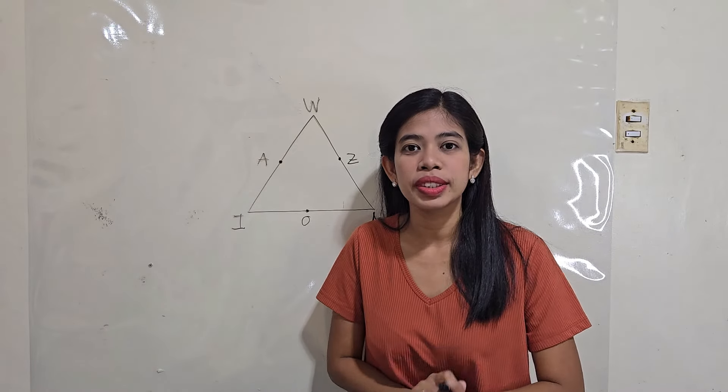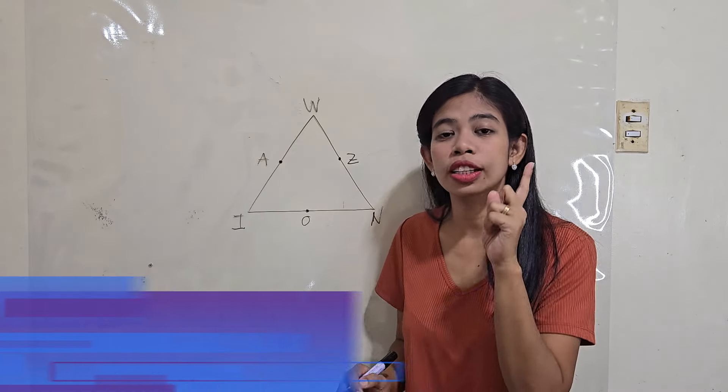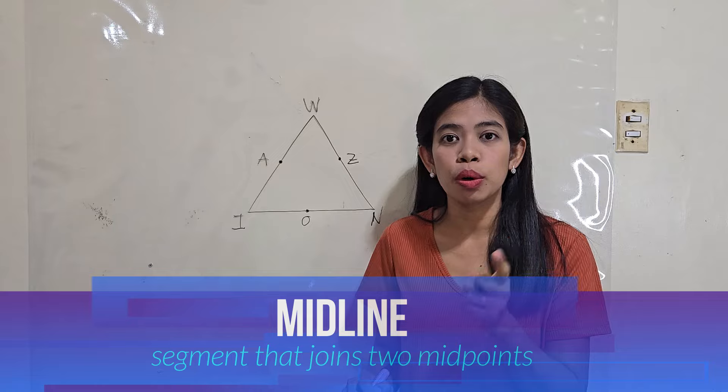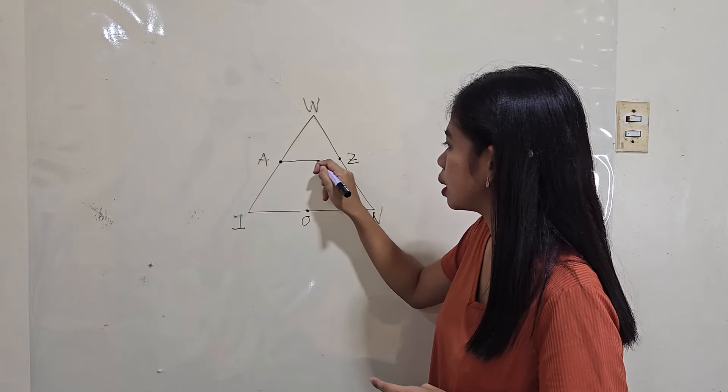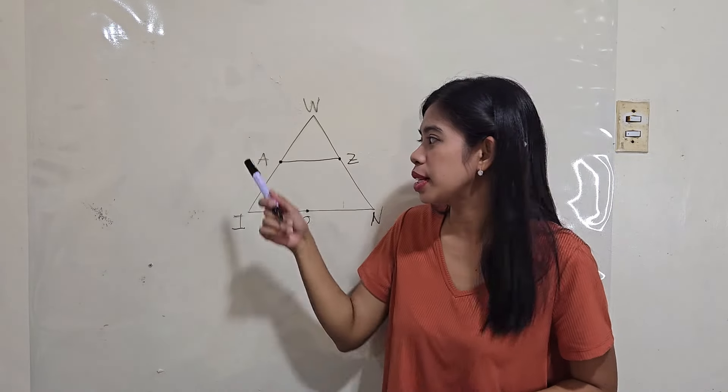Now, what is a midline? A midline is the segment that joins two midpoints. So, we can name this midline as midline AZ.